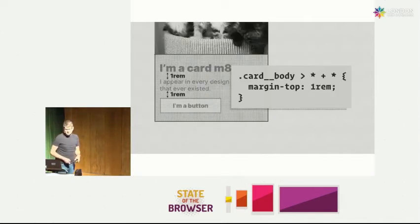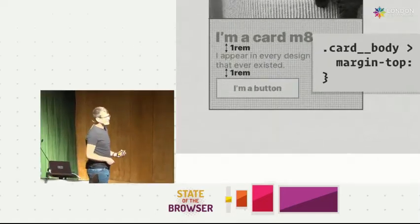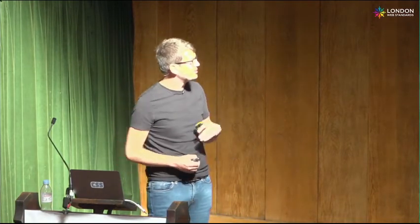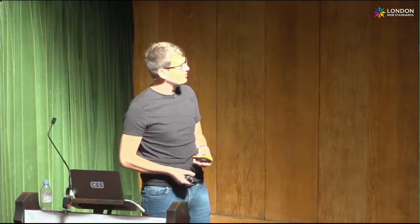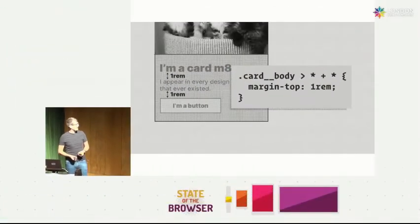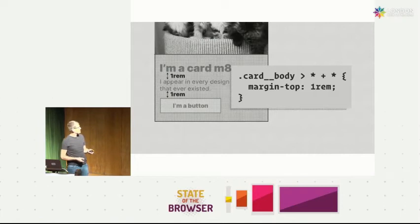Inside the actual elements themselves, I try to keep the CSS as light and global as possible. In the card body, I don't really want to care about what's in the card — I want to support anything that falls in there. So I use the lobotomised owl selector and add one rem margin on top of sibling elements, and you can see it's only adding it to the paragraph and the button. It's a really handy way of just supporting any content in there.